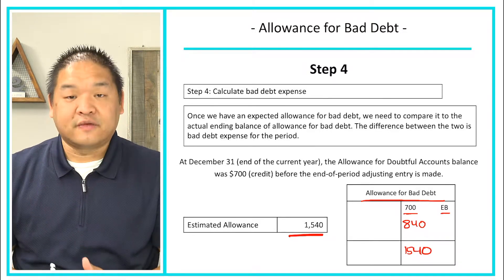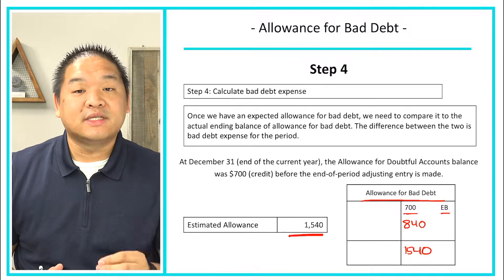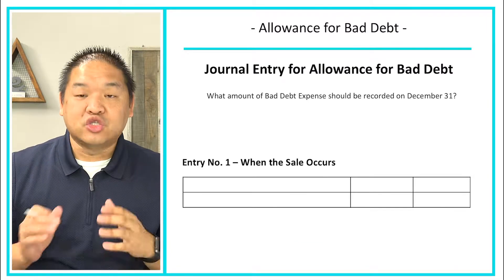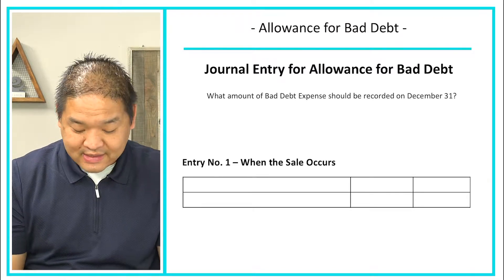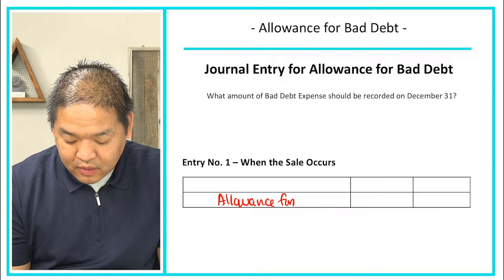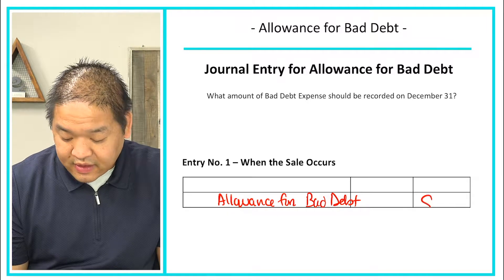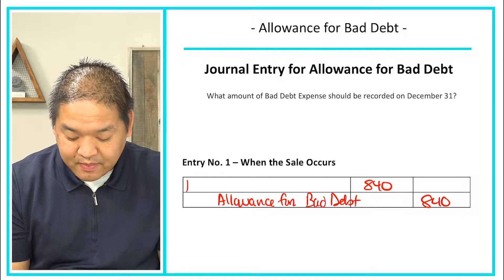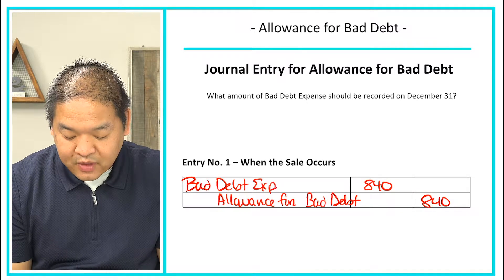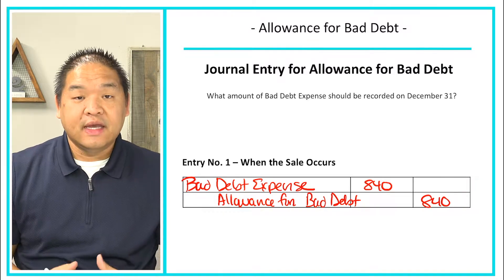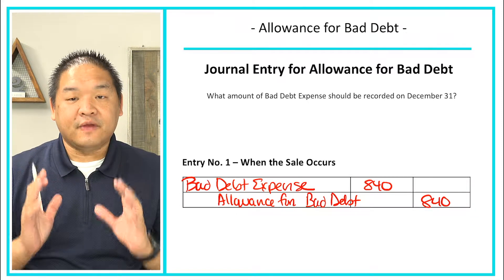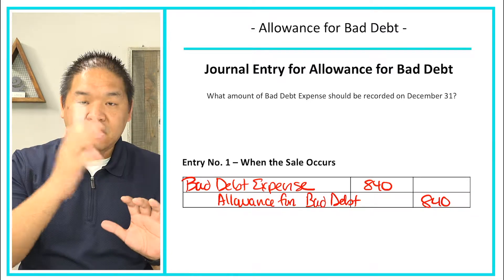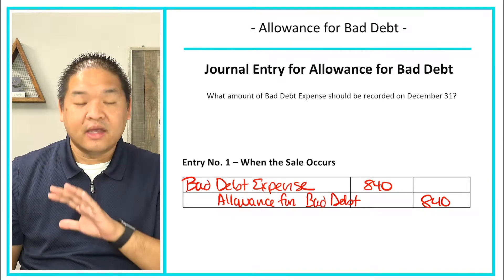We're going to credit allowance for bad debt $840, and we know we need a debit of $840 — the account is bad debt expense. So the journal entry is: debit bad debt expense $840, credit allowance for bad debt $840. When we do this, our allowance for bad debt — our cookie jar — is at $1,540. We expect that of the $17,000 owed to us, $1,540 is not going to be paid. We don't know when or who, but we set it aside so that when it happens, we can use it to extinguish the receivable.